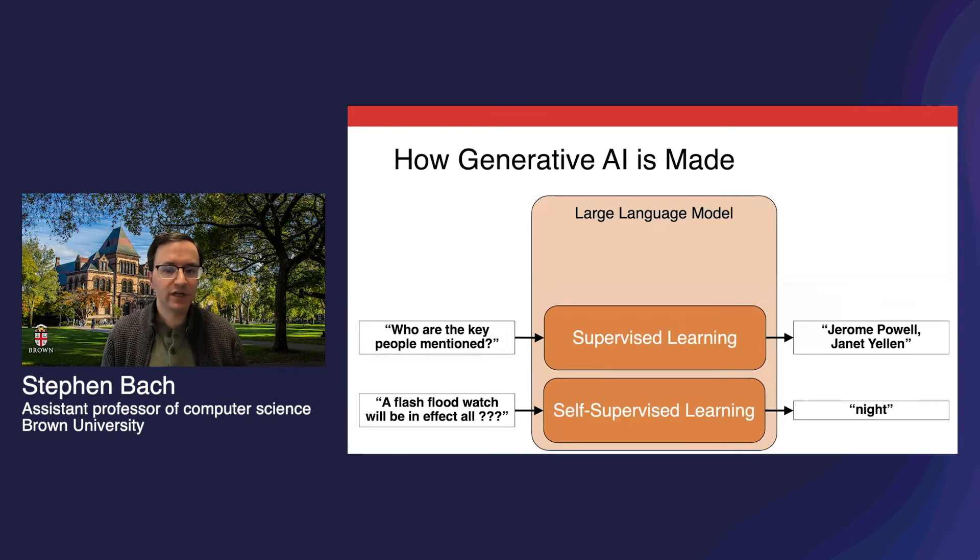With instruction tuning complete, the model is now trained explicitly to be a helper. It's responding to requests beyond just predicting the next words and sentences. But today, LLM training still doesn't stop there.